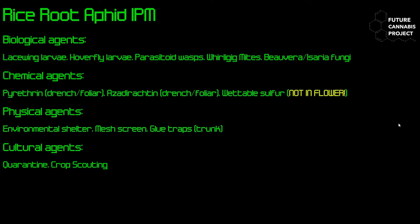For biocontrol, lacewing larvae, hoverfly larvae, parasitoid wasps, whirly gig mites, Beauveria bassiana, and Isaria fumosorosea are all effective options. I often like a multi-domain approach: use a botanical insecticide like pyrethrin as a root drench at the right rate, then follow up with Beauveria bassiana applied to the roots simultaneously. That combination is a very effective one-two punch. Wettable sulfur can also be applied to foliage, but avoid using it in flower.